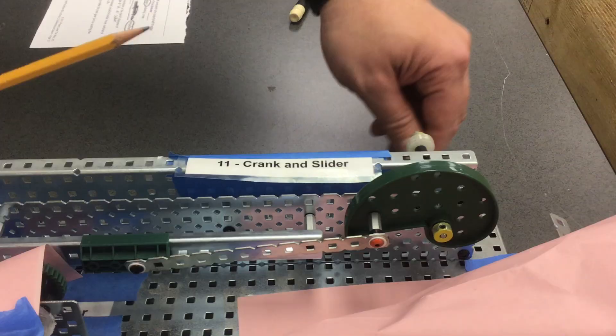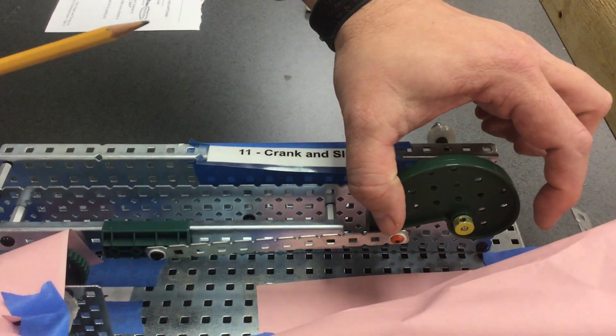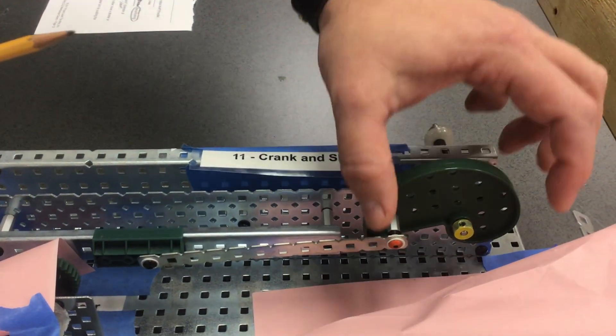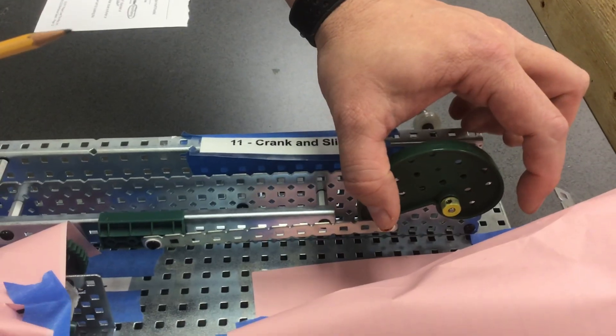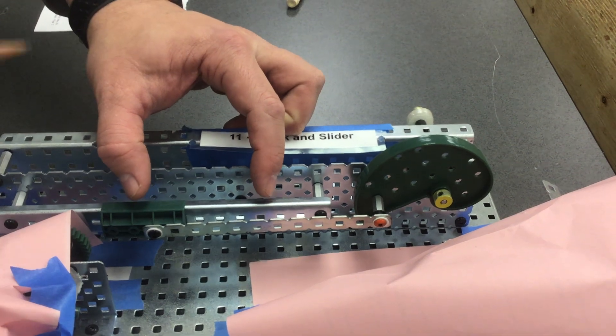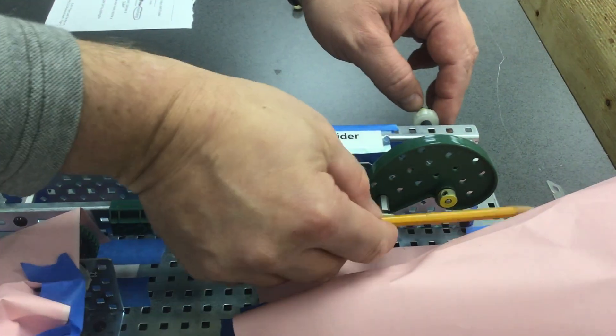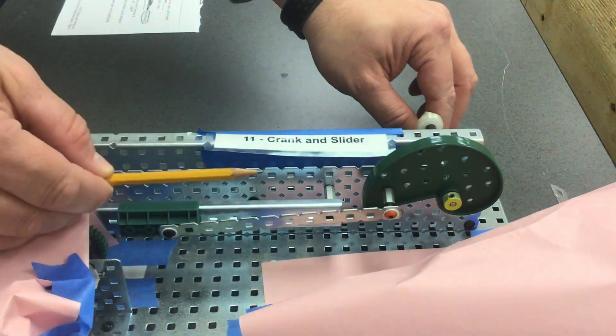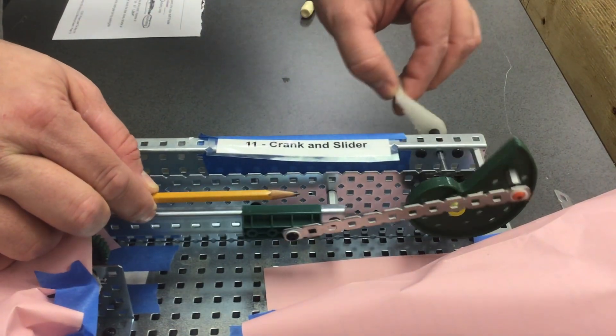Notice that the distance from here to here is the diameter, and that diameter is the distance that the slider will move. So if I say that's my diameter right there, this is how far the slider will move.